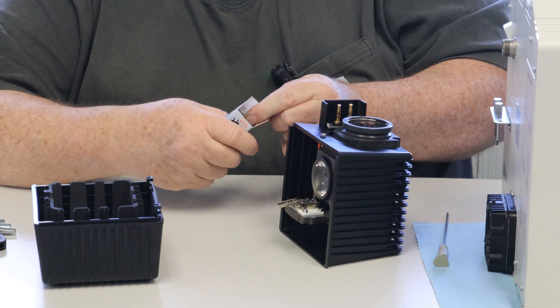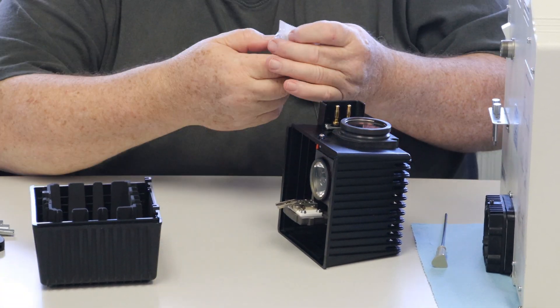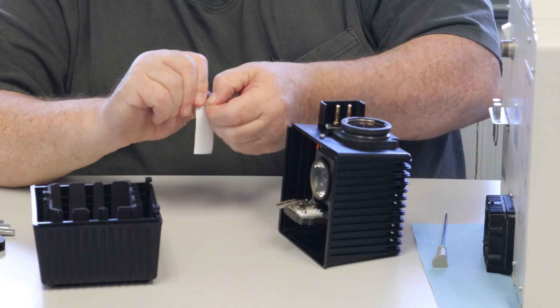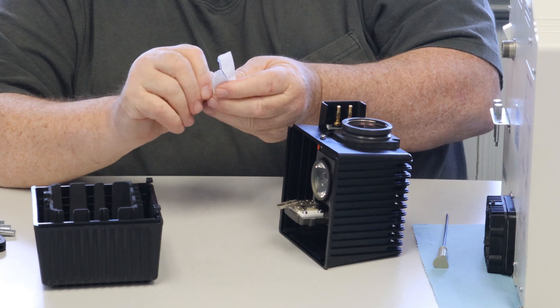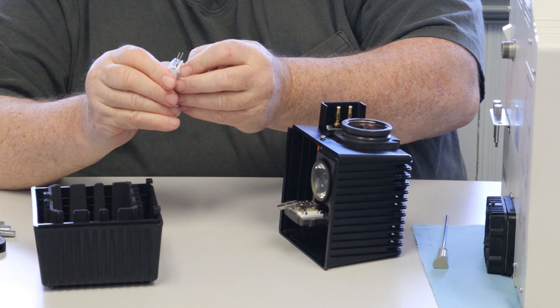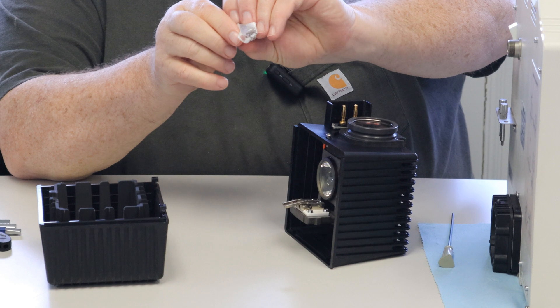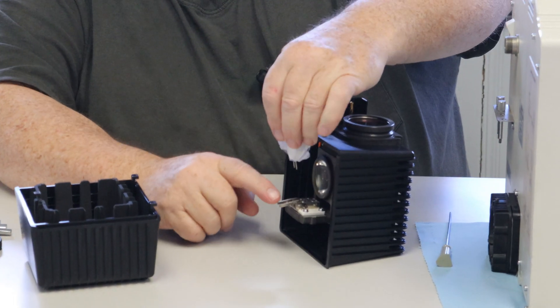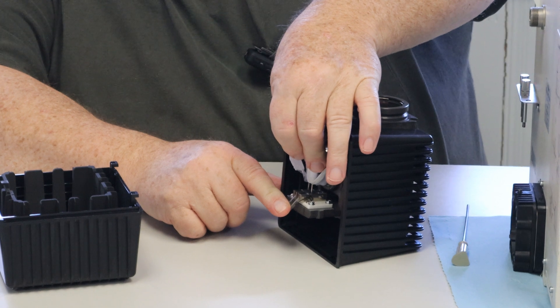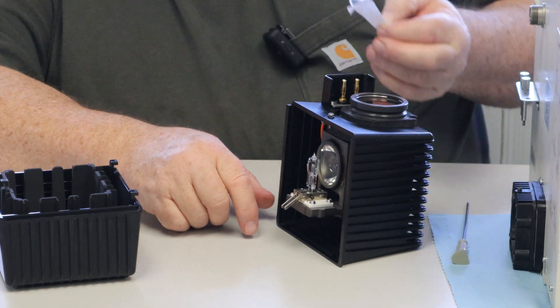We use the Osram 64625, 12 volt lamp. It comes in a nice little handy package that you can tear open and reveal the prongs or rods or plugs. This keeps your fingers off the globe. Then push down, plug in, and the paper comes right off.